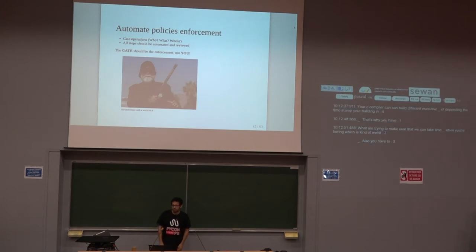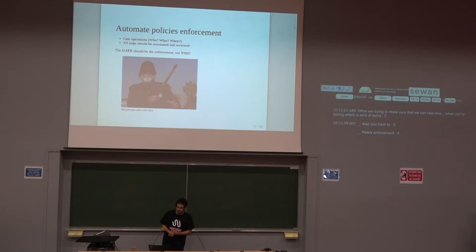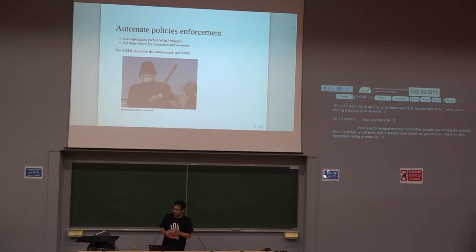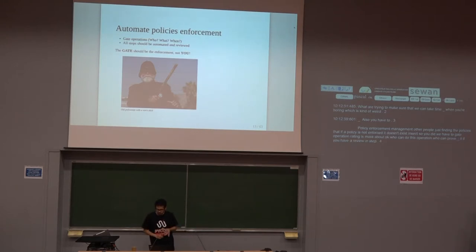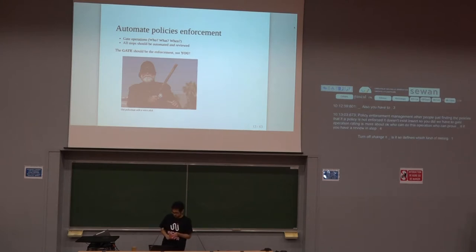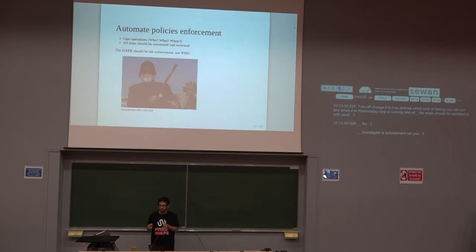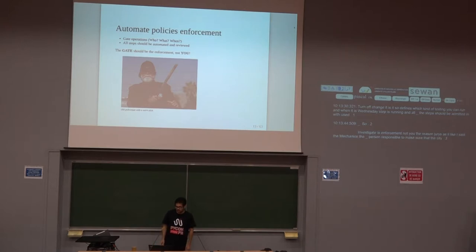You also have to automate policy enforcement. Release management defines the policies, but if a policy is not enforced, it effectively doesn't exist. You generally need gating: who can perform an operation, who can approve it, what kind of change triggers which tests, when each step runs — all of these should be automated and reviewed. The gate is the enforcement mechanism, not you. The release engineer, like a mechanic, is responsible for making sure the system runs optimally and safely.